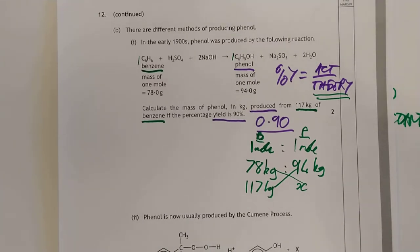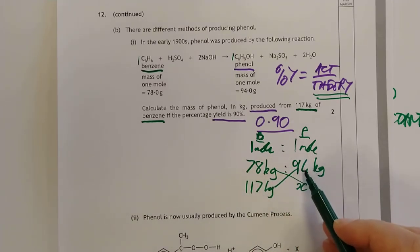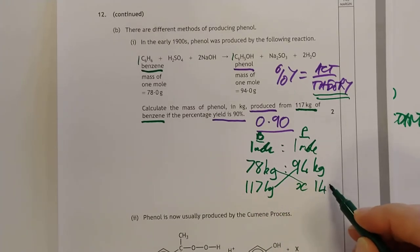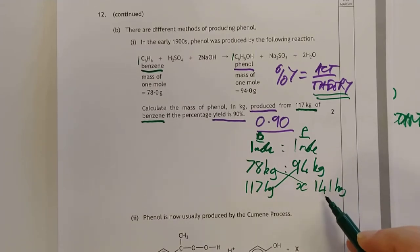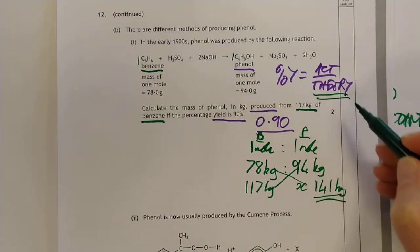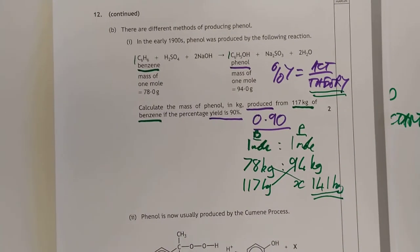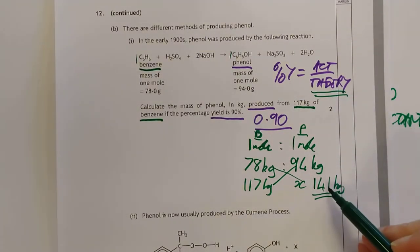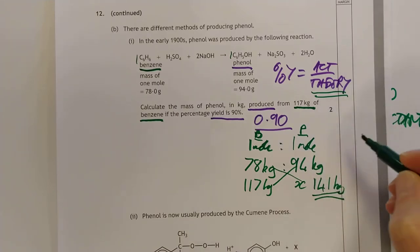That's going to be a mass and that's the theoretical mass you should have made. Cross multiply, X times 78 equals 117 times 94. Therefore X equals 117 times 94 over 78. I do like to do a quick check in my head. This is a chunk bigger than this so we should be getting something bigger than 117. And the answer is 141. It's still sensibly larger. That's your theoretical mass. Now we can go ahead and work out the actual mass which is theory 141 times the percentage yield which is 0.9.